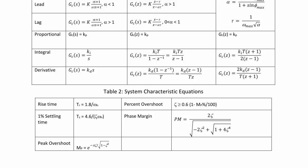percent overshoot, zeta greater than or equal to 0.6 times 1 minus peak overshoot, and phase margin equal to 2 zeta over the square root of negative 2 zeta squared plus the square root of 1 plus 4 zeta to the 4th.